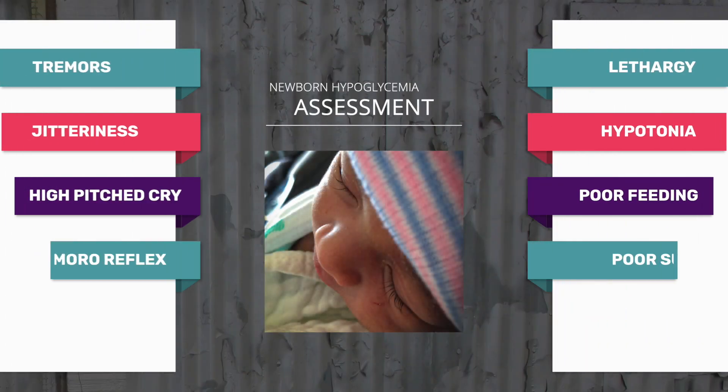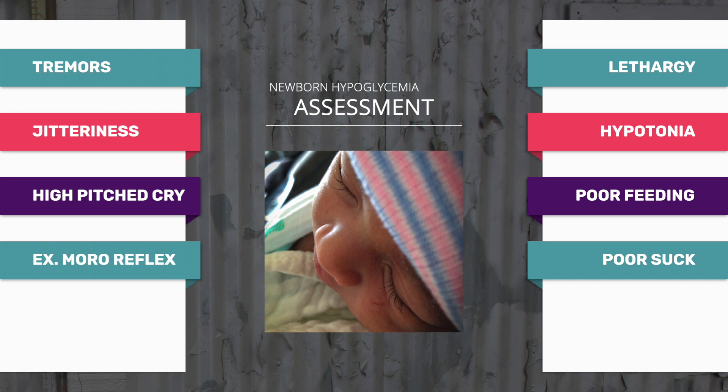For assessment findings with your newborn baby, you may see that they have some tremors, they may be a little jittery, a high-pitched cry, or an exaggerated Moro reflex. These are reasons to want to check for hypoglycemia. Also, if they have lethargy, hypotonia, which is a decreased muscle tone, or if they have some poor feeding or a poor suck, that's also a clue and indication of hypoglycemia.